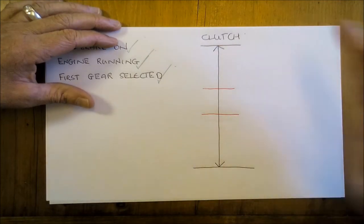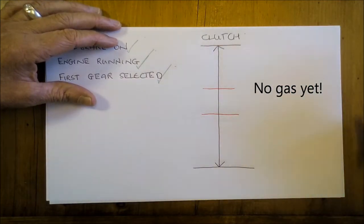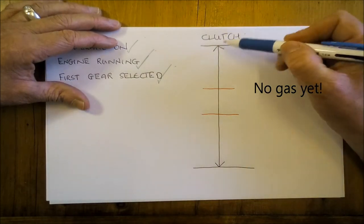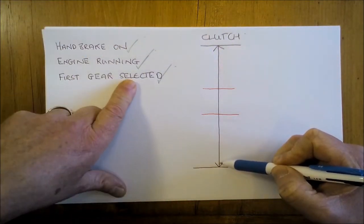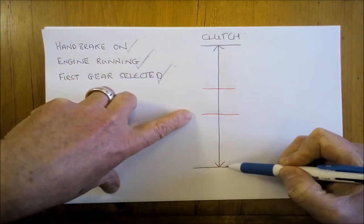At this point we're not having anything to do with the gas, so just forget about the gas for the moment. Just do this with the clutch. You push the clutch all the way down, you've selected first gear which is slotted in the range of the biting point.